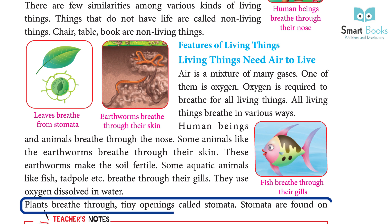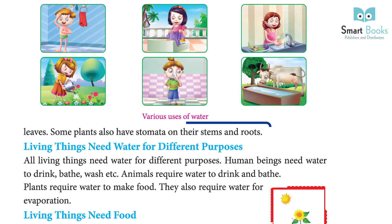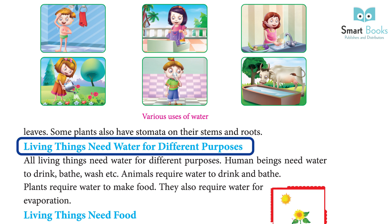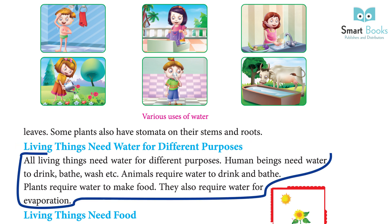Plants breathe through tiny openings called stomata. Stomata are found on leaves. Some leaves also have stomata on their stems and roots. All living things need water for different purposes.